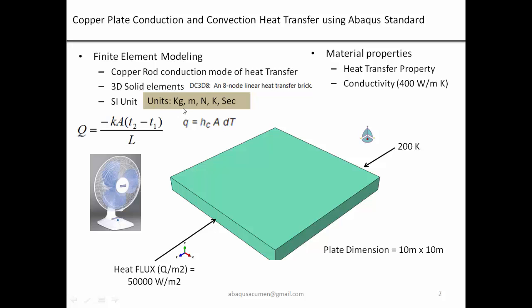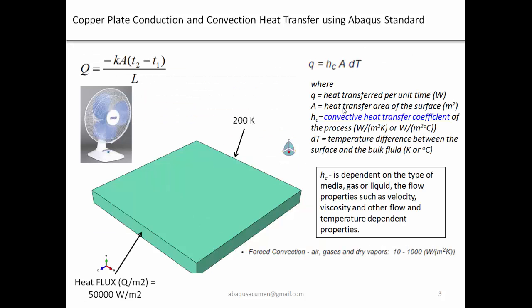We are going to use SI units: kg, meter, Newton, Kelvin, and seconds. For this specific problem we'll use copper conductivity of 400 watts per meter-Kelvin. We are not going into temperature-dependent conductivity, so only one conductivity value at room temperature will be used.